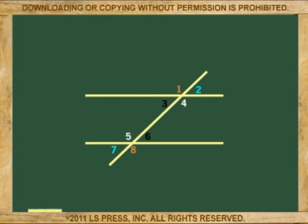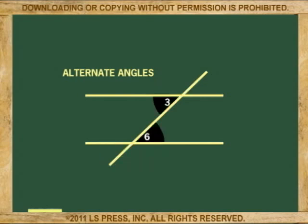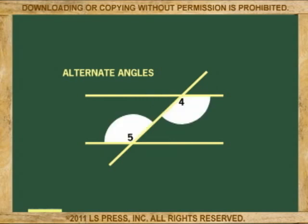Also, the following four pairs — because they are to either side of the transversal line — are called alternate angles: one and eight, two and seven, three and six, four and five.